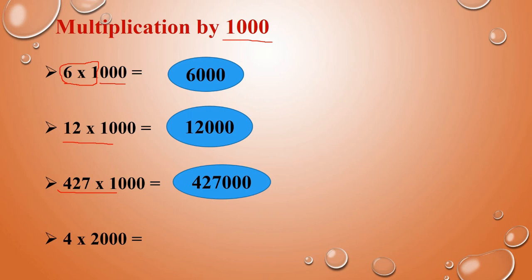Next: 4 into 2000. First, you have to multiply the number alone. 4 into 2 is 8. Then there are 3 zeros, so you have to add 3 zeros. The answer is 8,000.